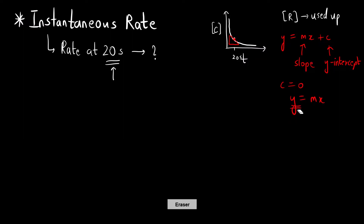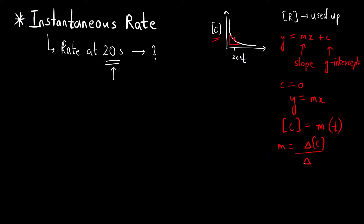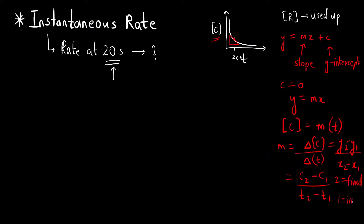Here, y is the quantity we plot on the y-axis, which is concentration, and x is the quantity on the x-axis, which is time. So the slope will be change in concentration divided by change in time — that is (C2 − C1) / (t2 − t1), where 2 means final and 1 means initial. We will understand this better when we look at the graph.